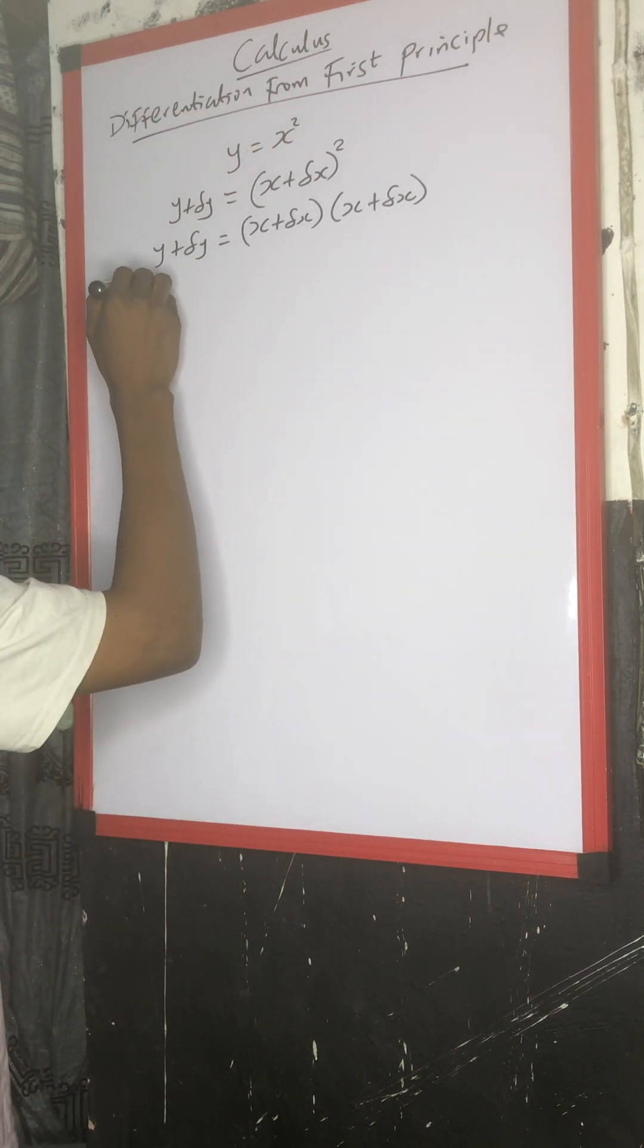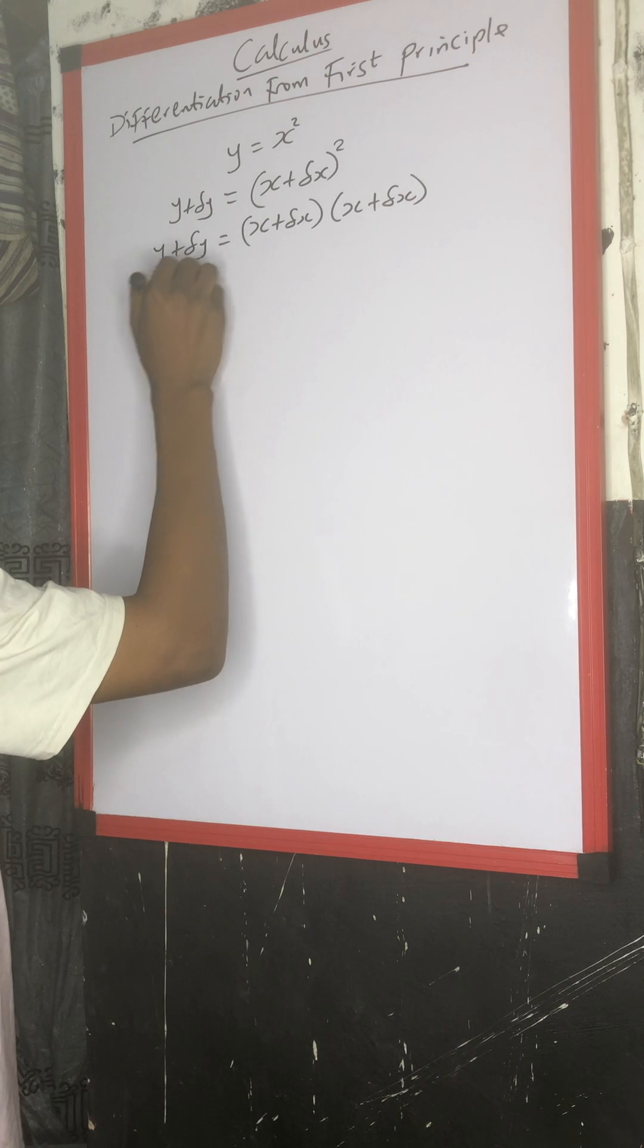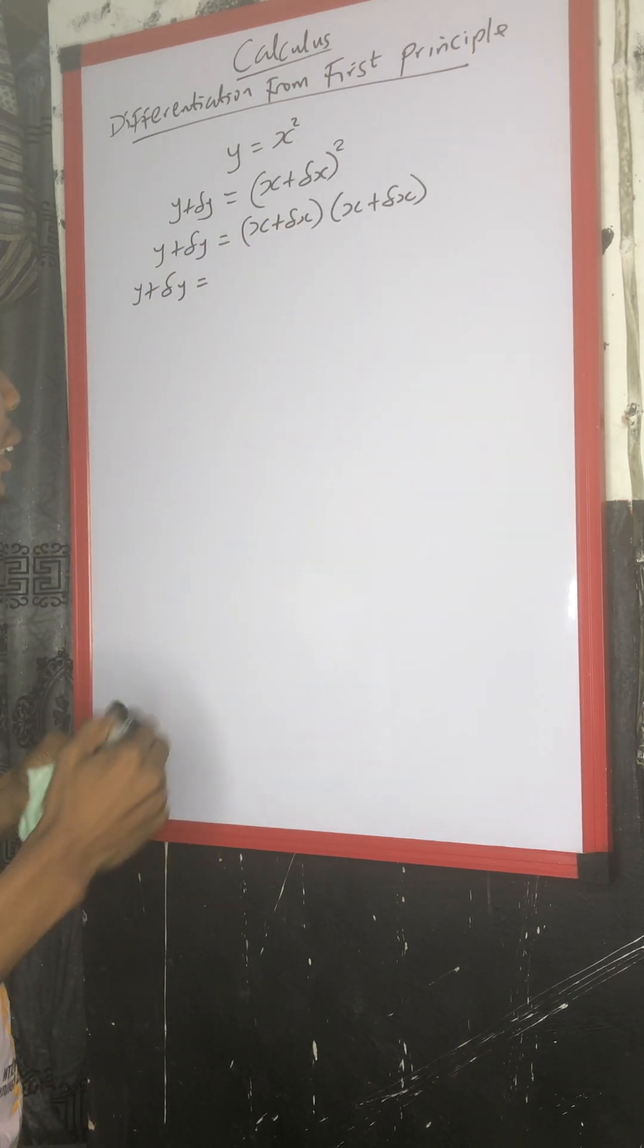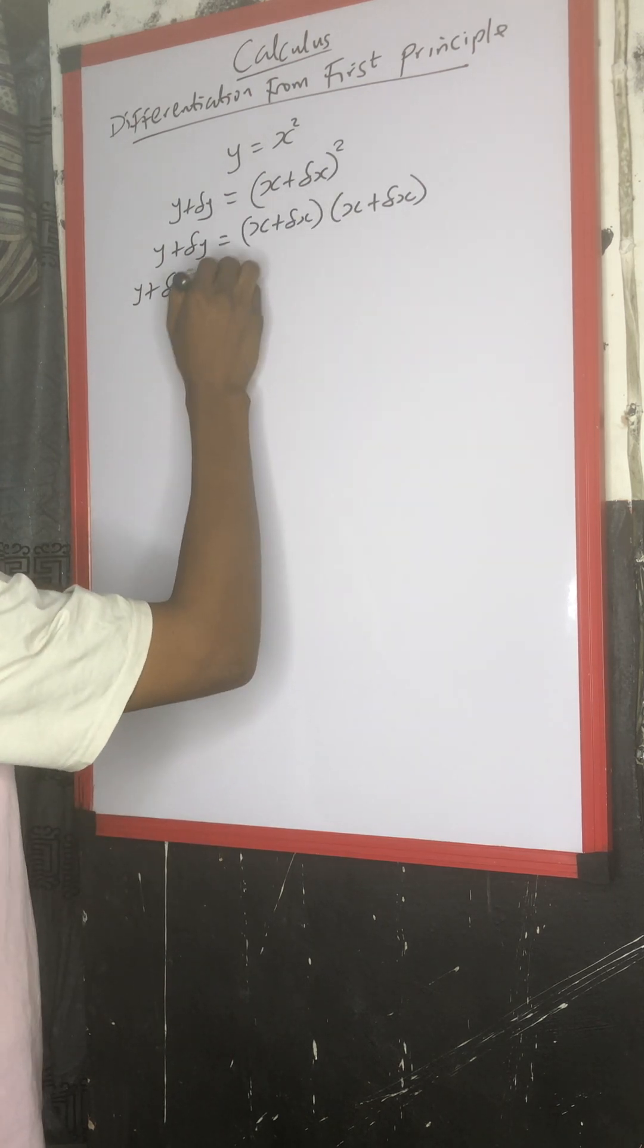then what you are going to do here is to open up the brackets. s times s gives us s squared. s times change in s gives us s change in x.